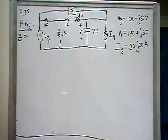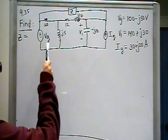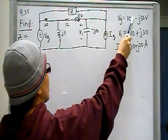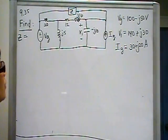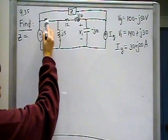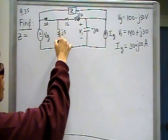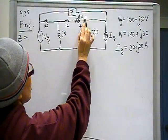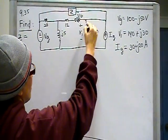This is the circuit that we have. We have V sub G there, and it's given that value of 100 minus j50 volts, 20 ohms here, j5 inductor here, 12 ohm resistor here.